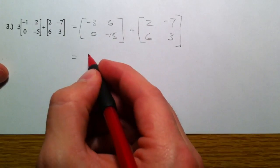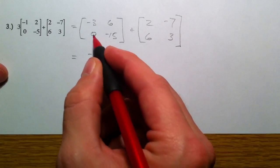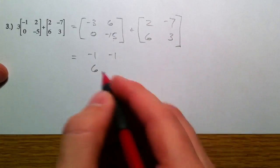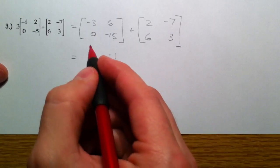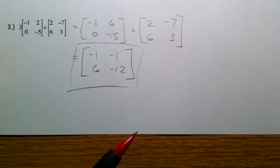So negative 3 and 2 make negative 1. 6 and negative 7 make negative 1. 0 and 6. And negative 15 and 3 make negative 12. All those corresponding parts is all you're going to add. And that is matrix addition.